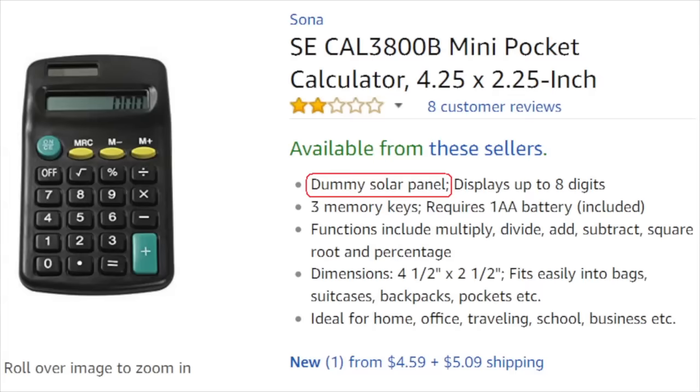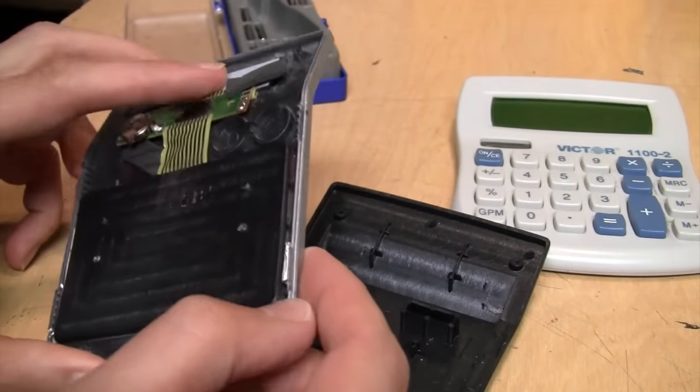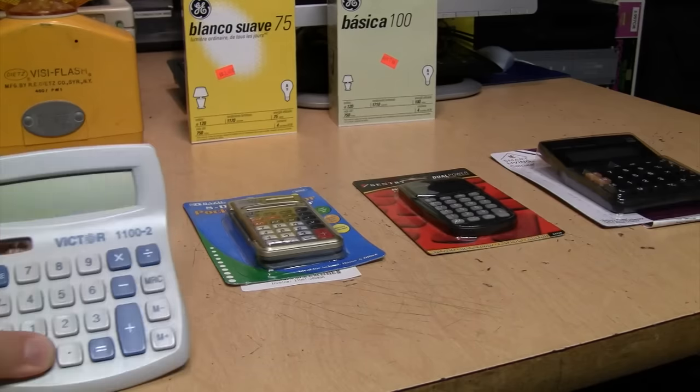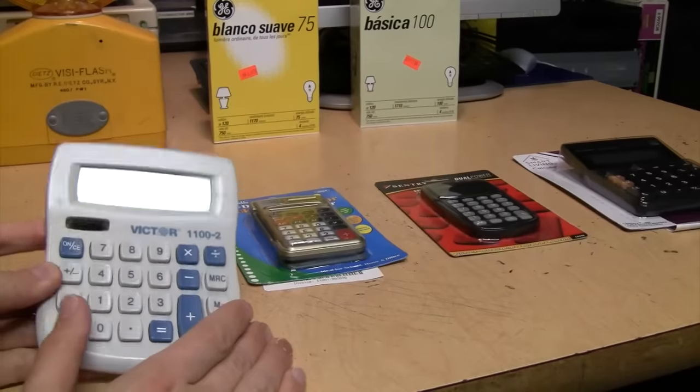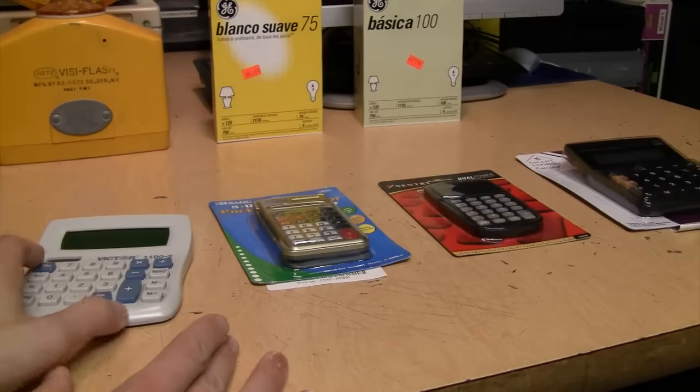I actually looked it up online and they call these in the industry dummy solar calculators. These things have gotten so cheap that they don't even put real solar cells in them anymore. So that's why I wanted to collect an assortment of similar cheap calculators and see how many, if all, or if any of these also have fake solar cells.